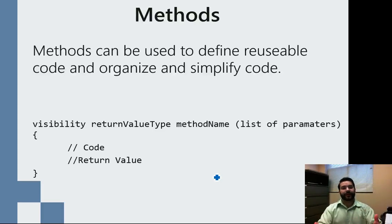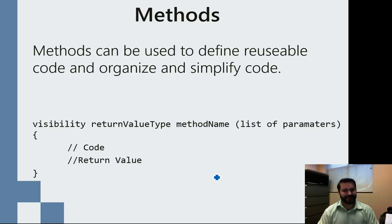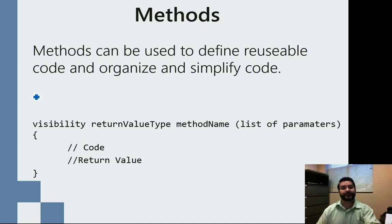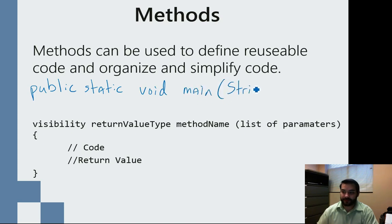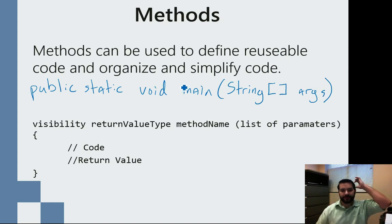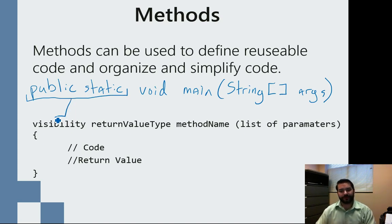One of the things that we use a lot in Java is known as a method. But there are a lot of mystical keywords and magical words that we throw out there when we start talking about methods, and I just want to look at them. Let's look at something basic — our main method, the thing that we've been writing pretty much since the start of the class: public static void main String args. These two words, public static, fall into what we call our visibility modifier.